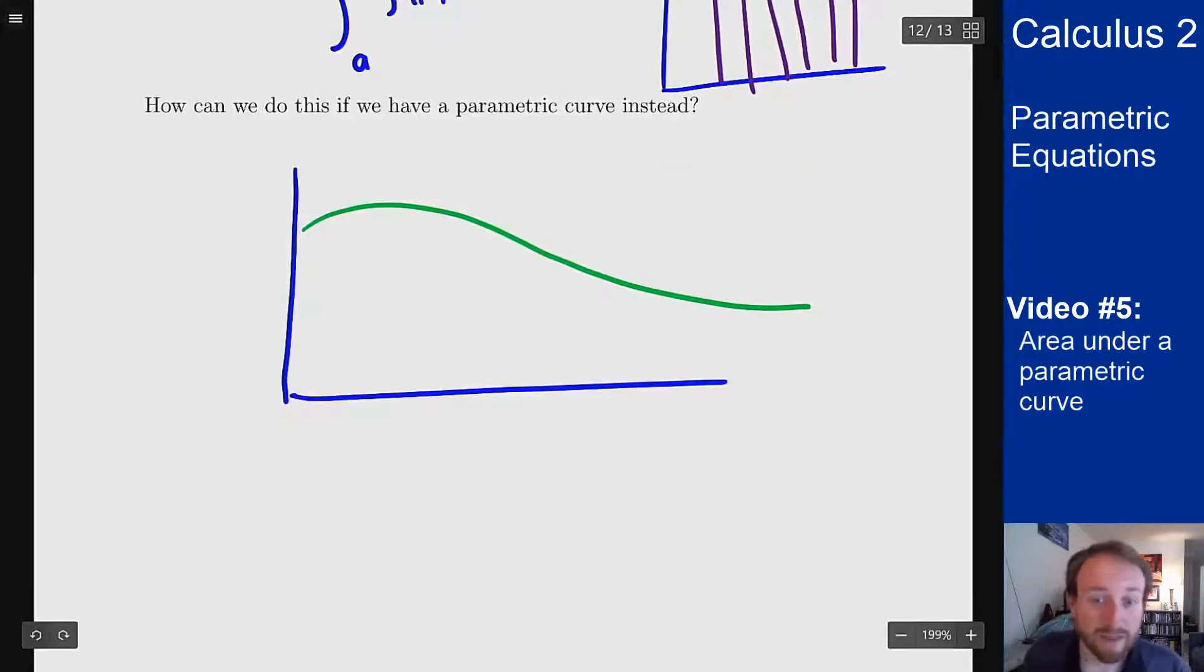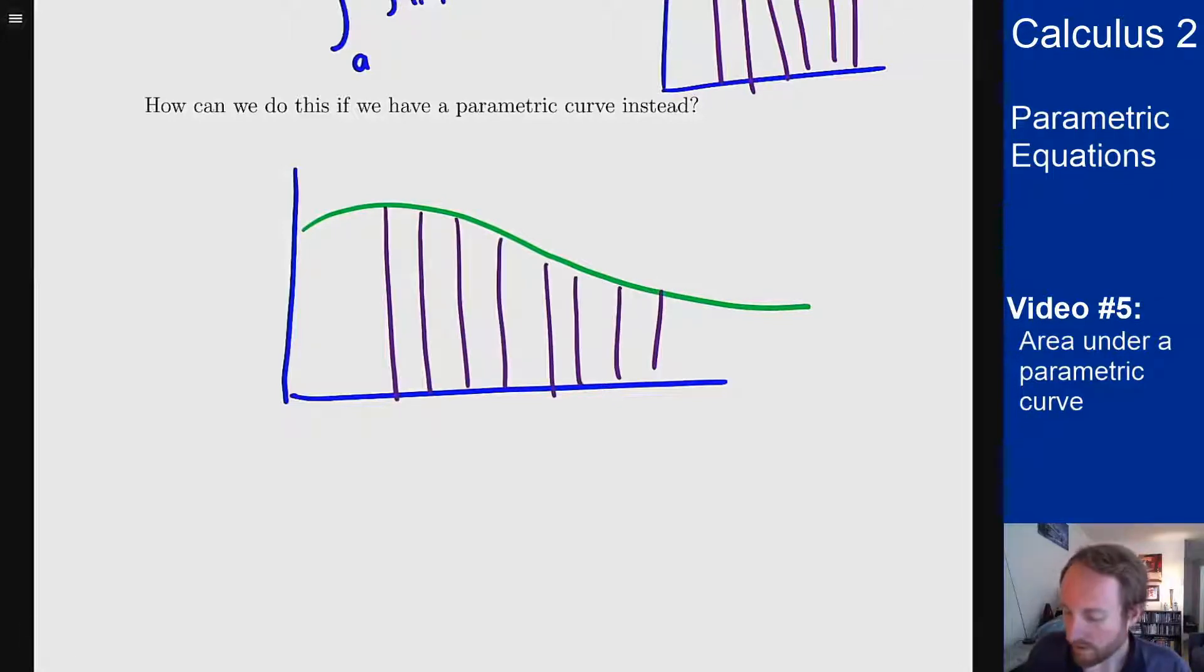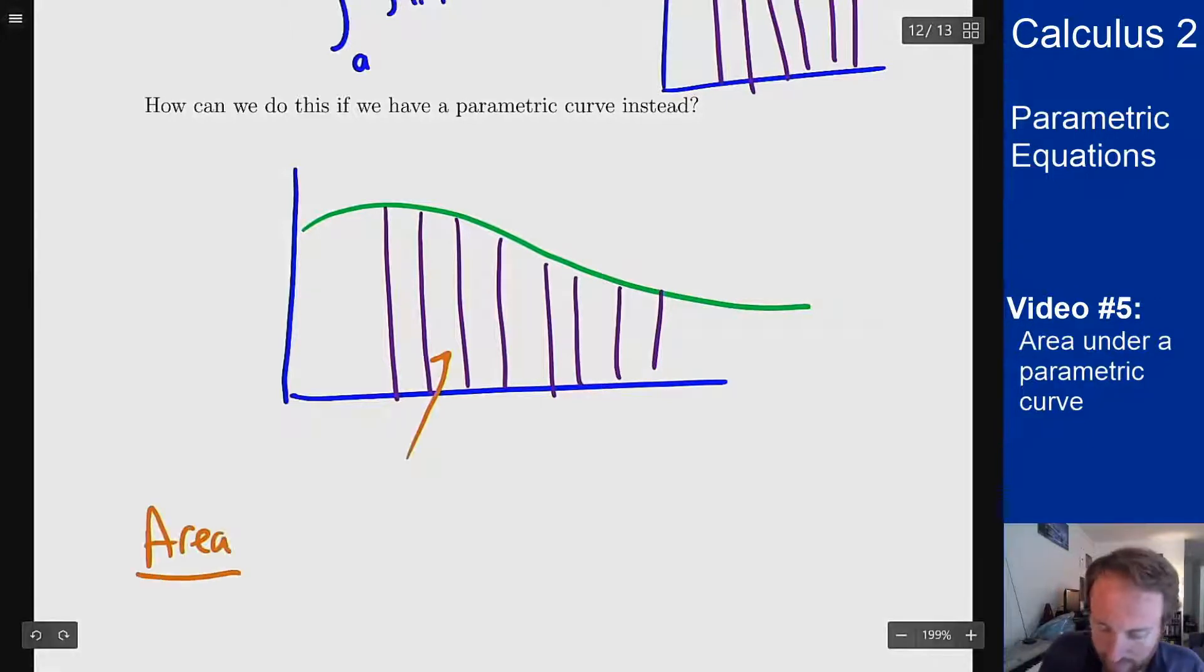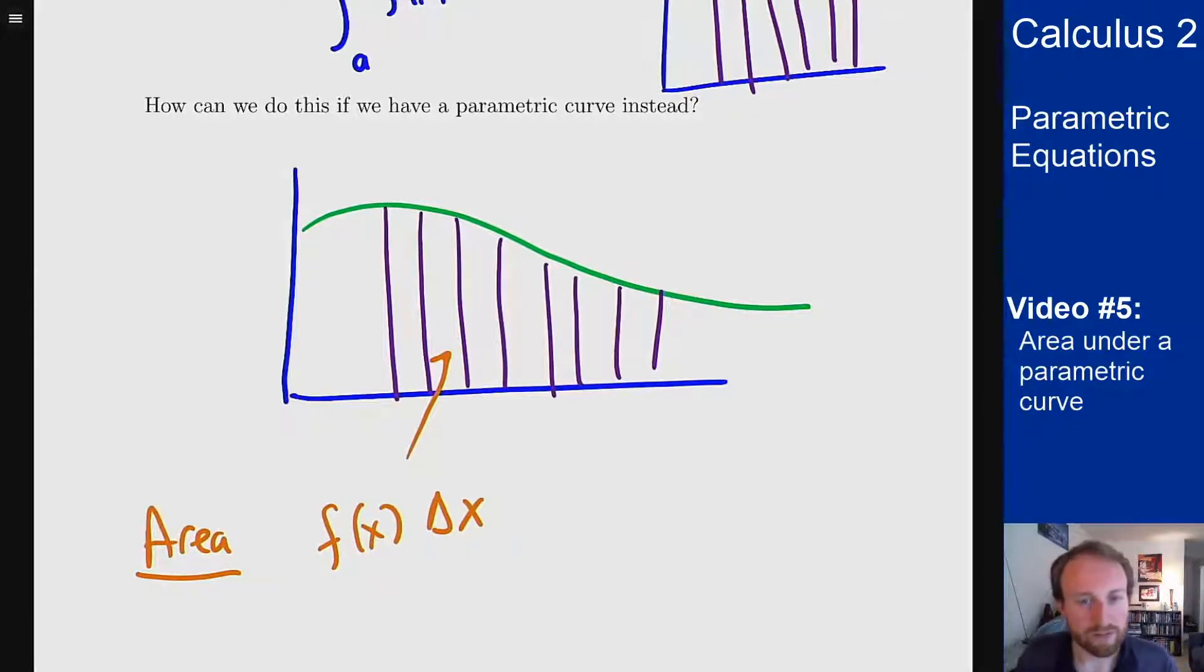Let's say you have something like this that is now defined parametrically. I want to do the exact same process and see what that looks like. So with this setup, what's the area of one rectangle? Well, the area of one rectangle is from our normal calc 1 stuff, the function value times the change in x. But in this case, what's really my function? My function is really the height, it's really the y value.